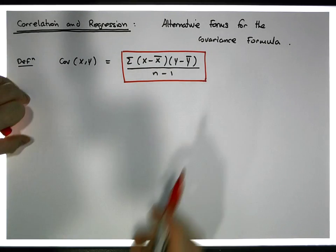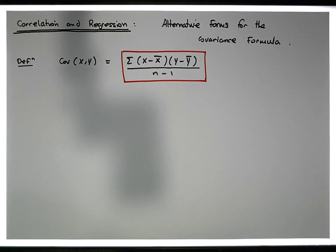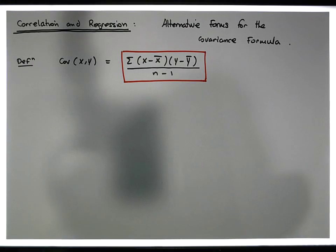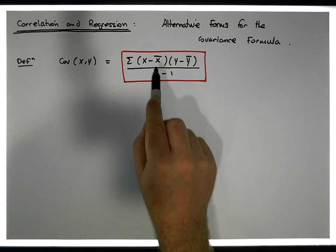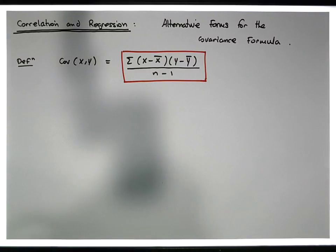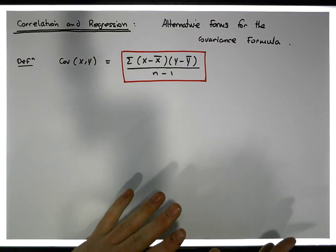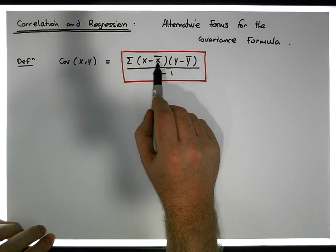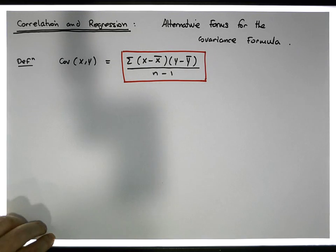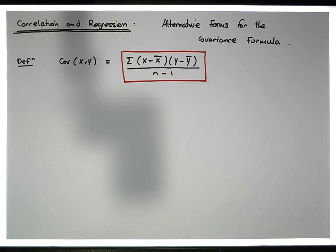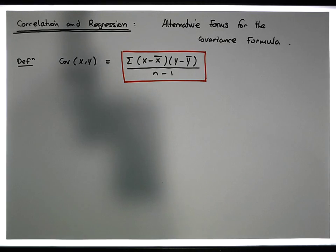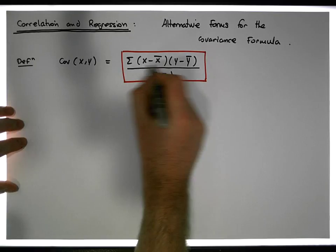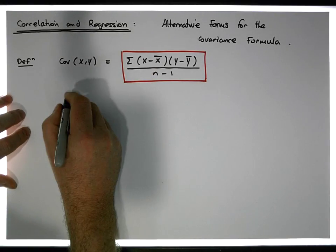I'd like to convert this into two additional forms: one where we just have expected values — x̄ and ȳ — and another where we don't have expected values but just have summations. To do that, I'm going to concentrate first of all on just the numerator and we'll do two derivations on it.